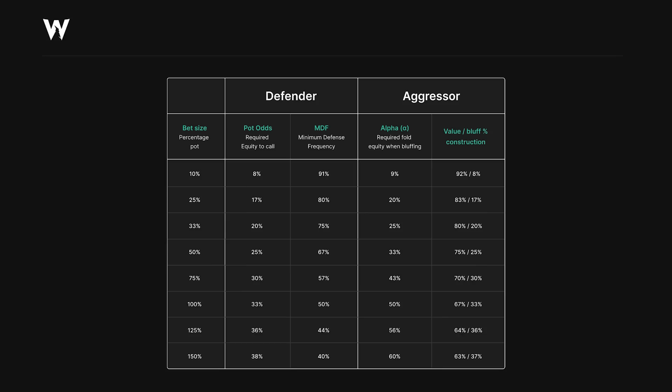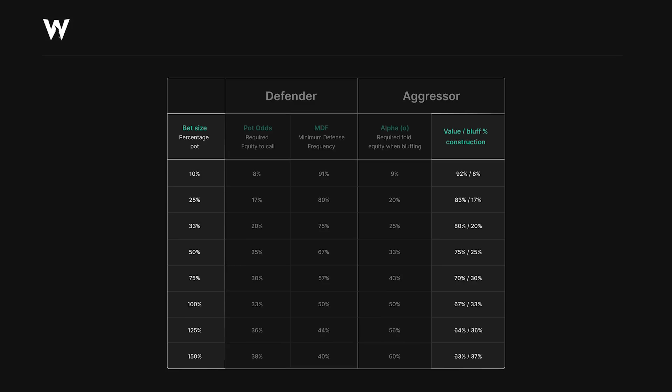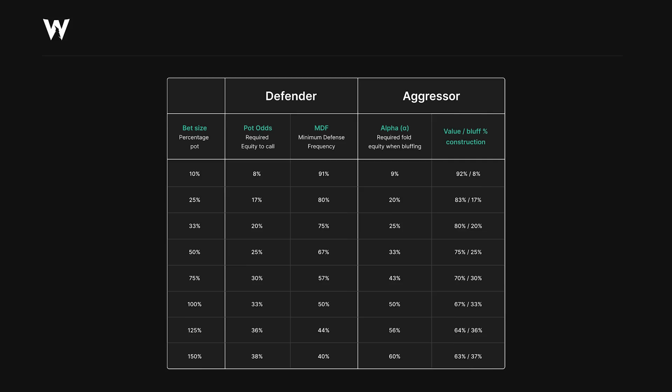That's because villain needs 25% equity to break even on a call, so if a quarter of our range are bluffs, we make them indifferent between calling and folding. You'll notice that the larger we bet, the more bluffs we can use. If you bet 150% pot, villain needs roughly 37–38% equity to call, so a larger proportion of our betting range can be bluffs. Keep in mind this assumes a perfectly polarized toy game where value hands always win and bluffs always lose.